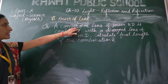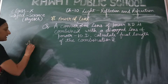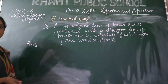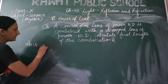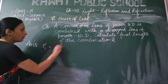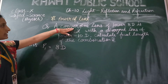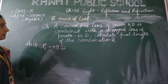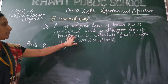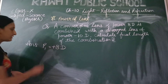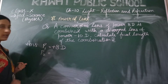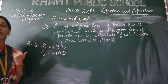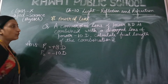A convergent lens means a convex lens — taking it as lens 1, the power of the first lens is 8 diopter. This is a convergent, convex lens with positive sign. It is combined with a divergent lens of power minus 10 diopter — a concave lens with minus sign, minus 10 diopter. We have to find out the focal length of the combination.